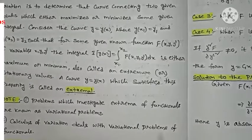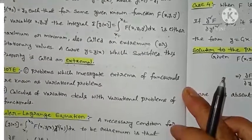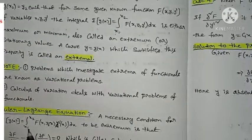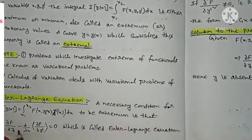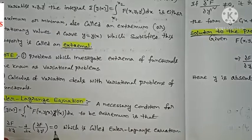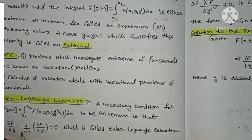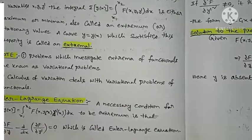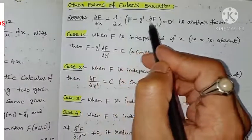In this section we have an important equation: Euler-Lagrange's equation. A necessary condition for I[y(x)] = ∫ from x₁ to x₂ of F(x, y(x), y-dash(x)) dx to be an extremum is that ∂F/∂y − d/dx(∂F/∂y-dash) = 0, which is called the Euler-Lagrange equation. Whenever the given functional is to be extremum, it must satisfy this equation. Another form is ∂F/∂x − d/dx(F − y-dash · ∂F/∂y-dash) = 0.